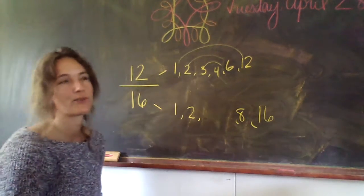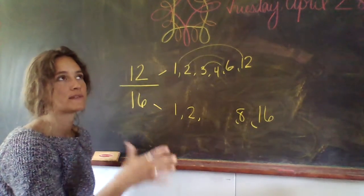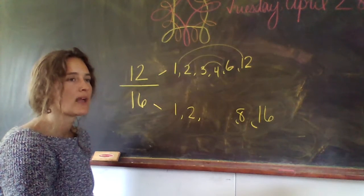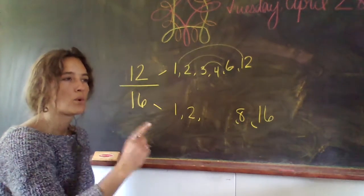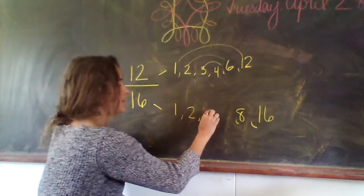2 times 8 is 16. Does 3 go into 16? 3, 6, 9, 12, 15. I don't need to skip count for that one. 4, 8, 12, 16. Oh, 4 goes into it.